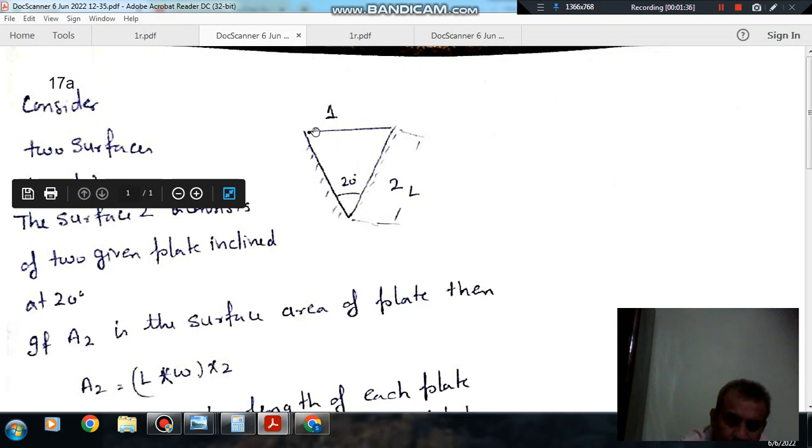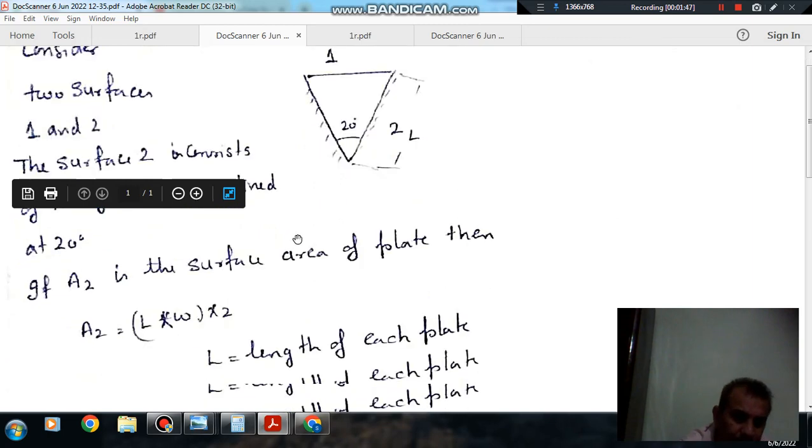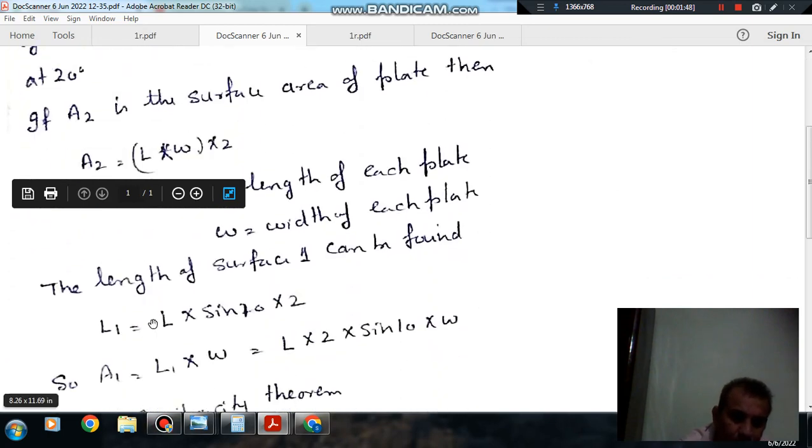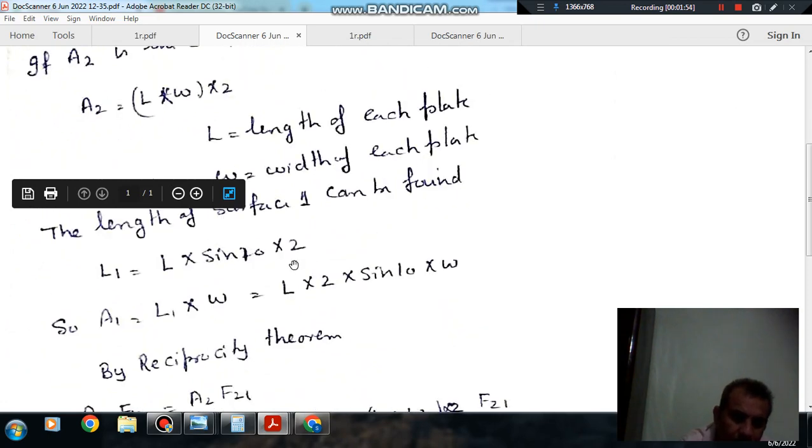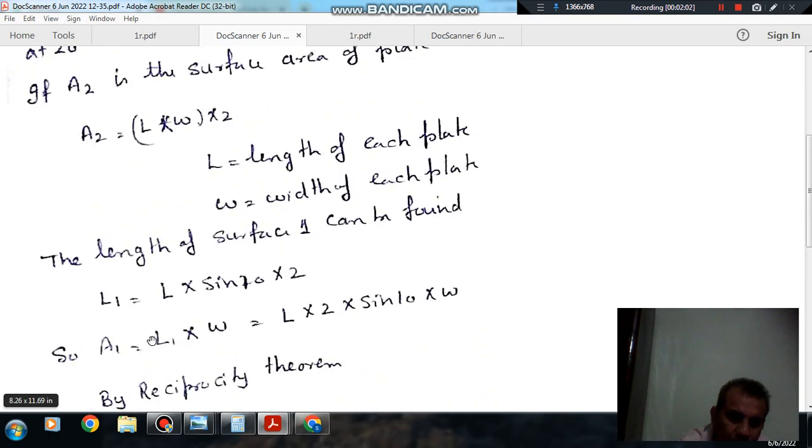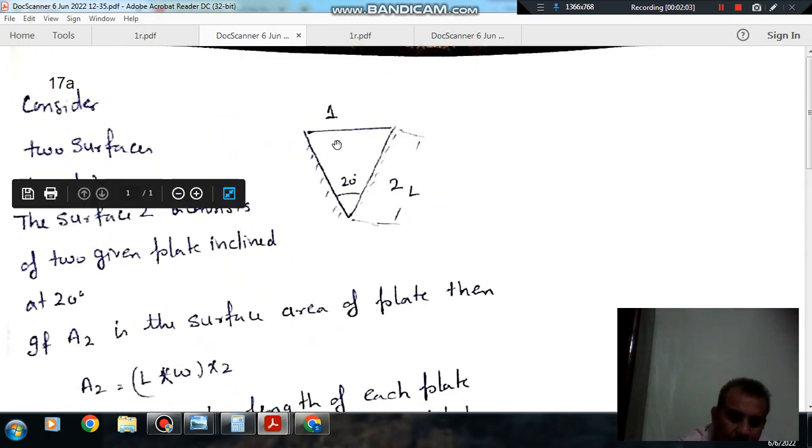If you want to calculate the length of plate 1, then this angle will be 10 degrees and this length will be L. This length will be L sin 10, and half of the height will be L sin 10, so the full length will be 2L sin 10. So that length will be 2L sin 10.